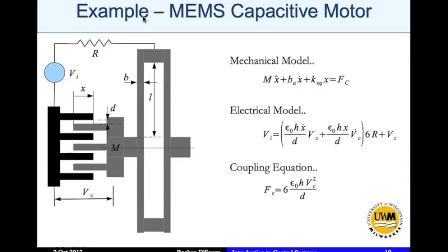In this video we'll look at an example of linearization. This is a real example: a MEMS capacitive motor, which is essentially a variable capacitor. The input voltage has some resistance R in the wiring. Vc is the voltage across the two plates of the capacitor — one moving plate and one stationary plate. The common distance between the two plates is X, the gap between the capacitors is D, and there are six of these capacitors in parallel.